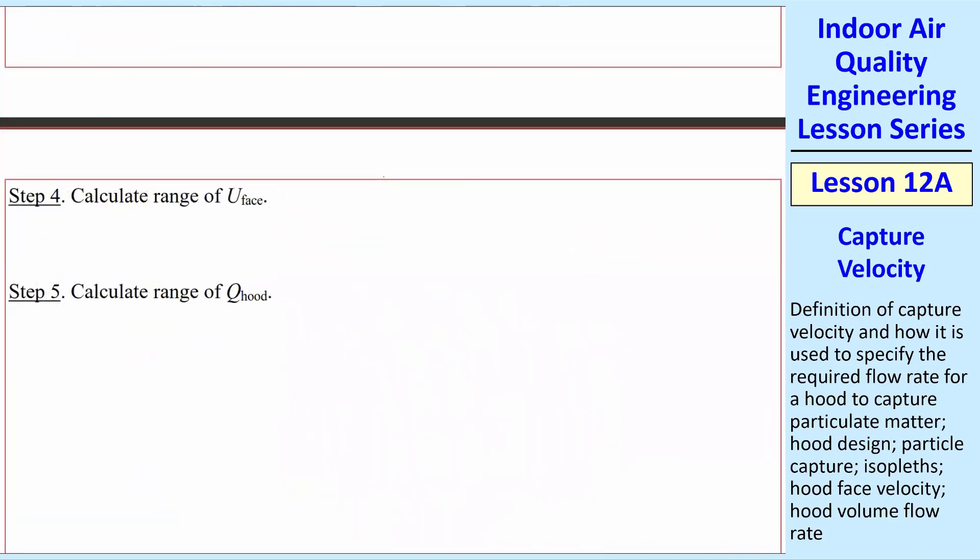Step four is calculate the range of Uface. U over Uface is equal to 0.075, from which Uface is U over 0.075, just solving for Uface. Uface is equal to 2,666.7 feet per minute.